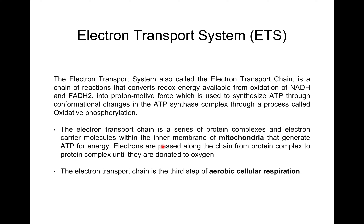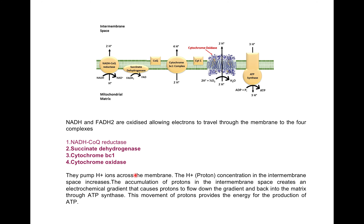Electrons are passed along the chain from one protein complex to another until they are donated to oxygen. The electron transport chain is the third step of aerobic cellular respiration — first is glycolysis, second is the Krebs cycle, and third is the electron transport chain. NADH and FADH2 obtained from glycolysis and the Krebs cycle are oxidized, allowing electrons to travel through a membrane to the four complexes: NADH coenzyme Q reductase, succinate dehydrogenase, cytochrome BC1 complex, and cytochrome oxidase.